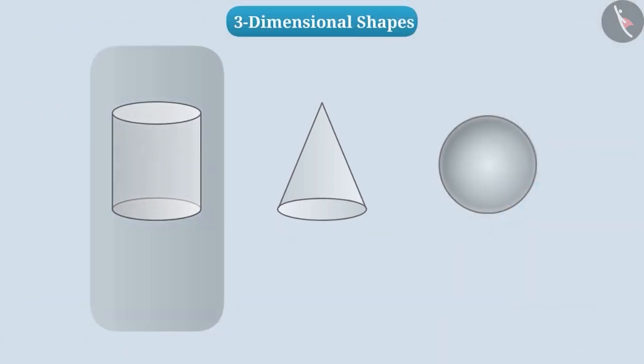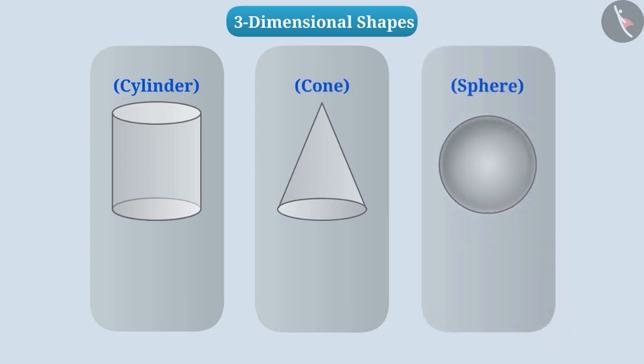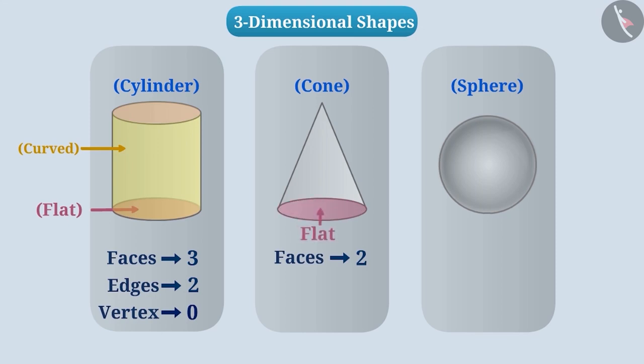Now look here. This is a cylinder. This is cone and this is a sphere. As you can see, there are three faces in the cylinder, which have two flat faces and one curved face. In this, we also see that there are two edges, but there is no vertex in it. The cone has two faces out of which one is flat face and the other is curved face. Similarly, it has a vertex and an edge. Talking about the sphere, it has one face, but it does not have an edge and a vertex.